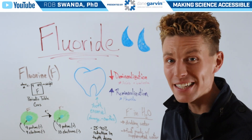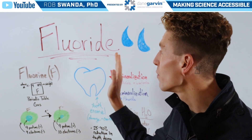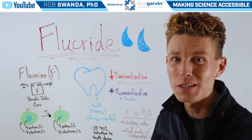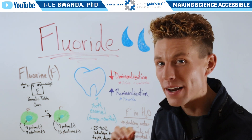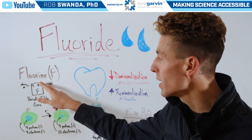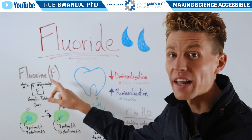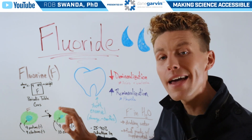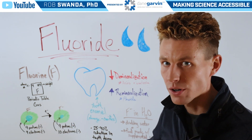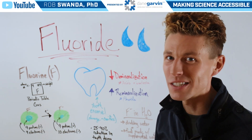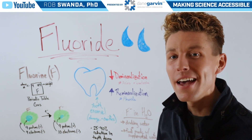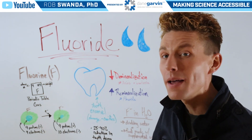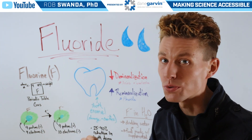For today's lesson, let's talk about fluoride. But before we do, we have to head over to the periodic table and talk about an element known as fluorine, which is abbreviated F. Fluorine is composed of nine protons and nine electrons, protons being positively charged and electrons being negatively charged. So a fluorine atom has a net neutral charge.